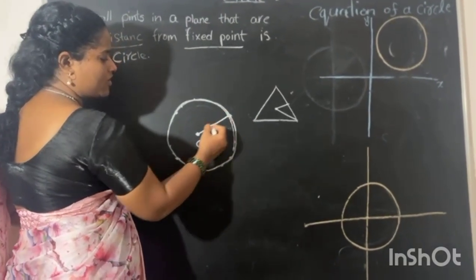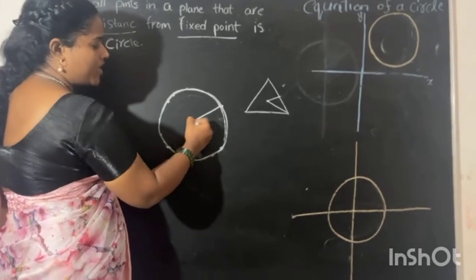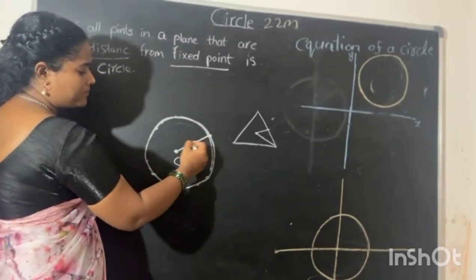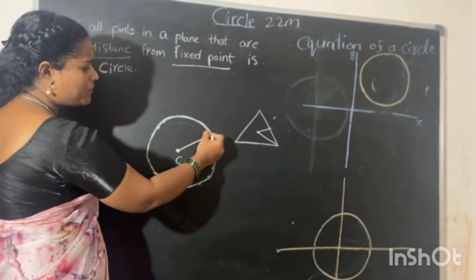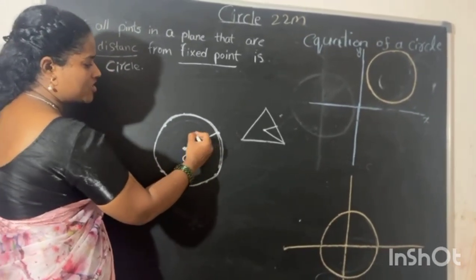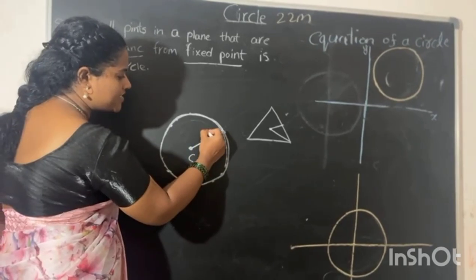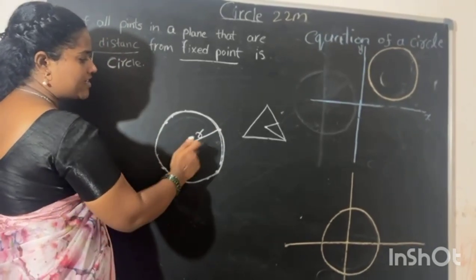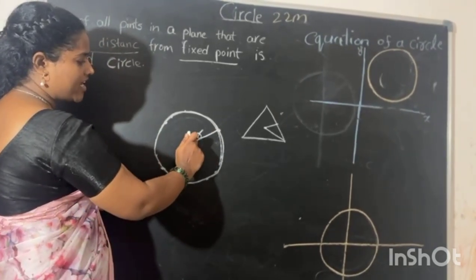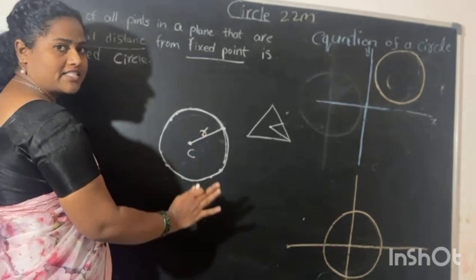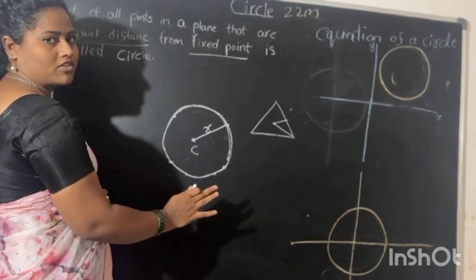Let's take a point from this point. If we look at this point from the center of the circle, we will look at radius r. If we look at this point from this point, we will look at the same point.